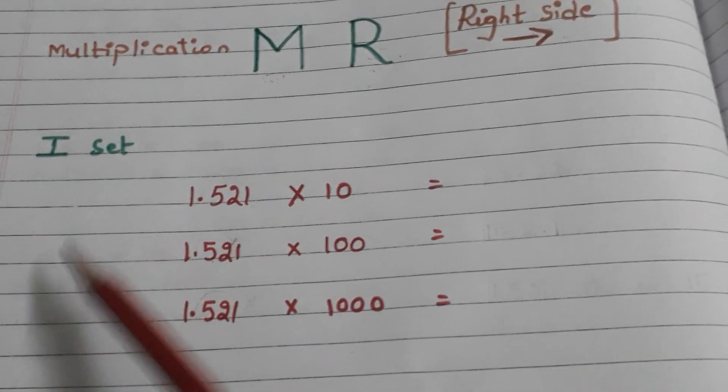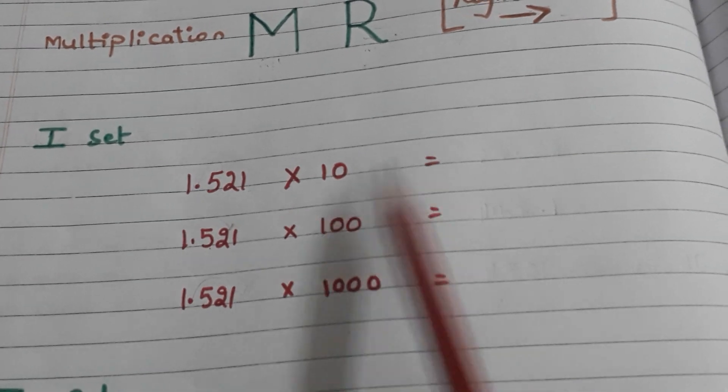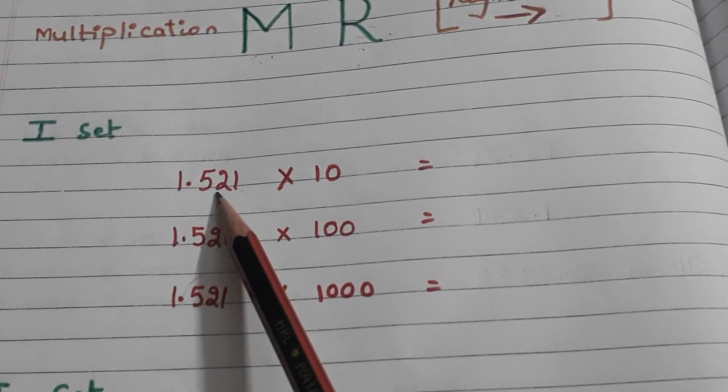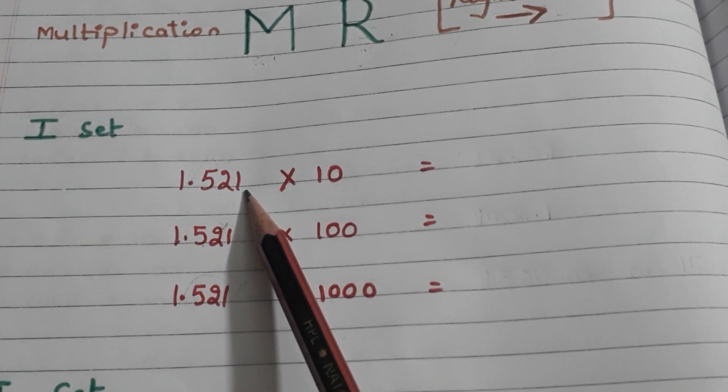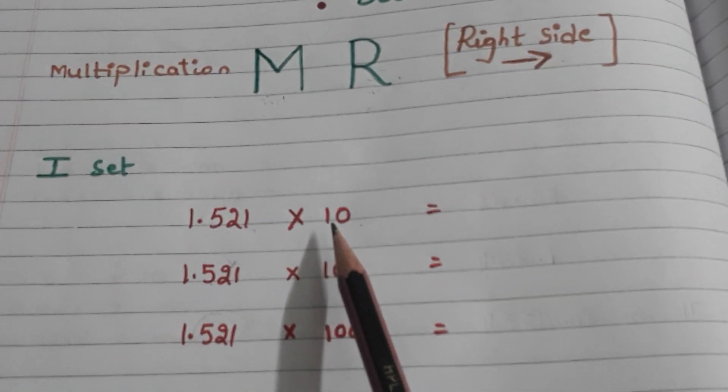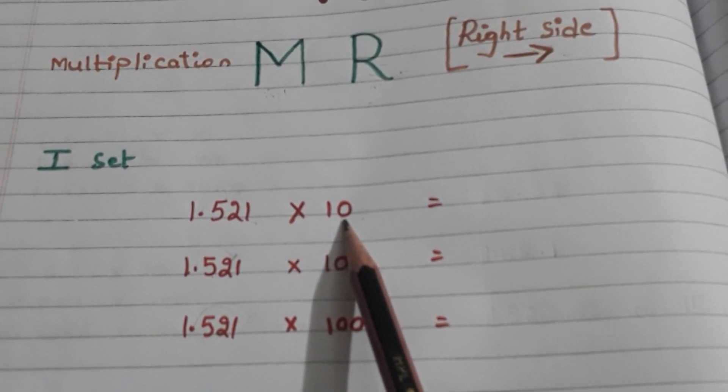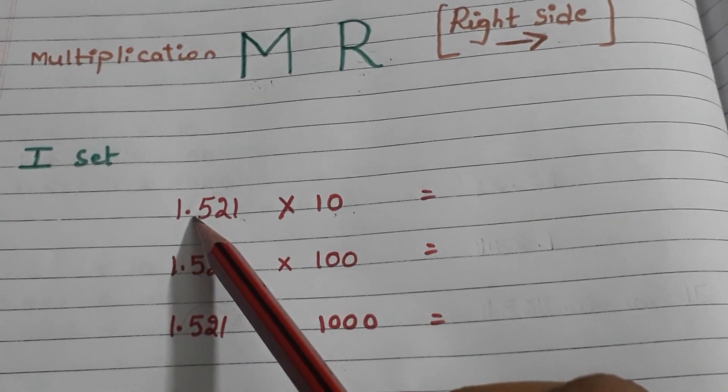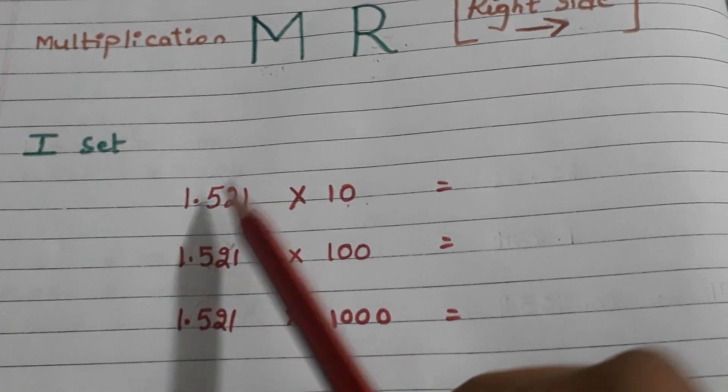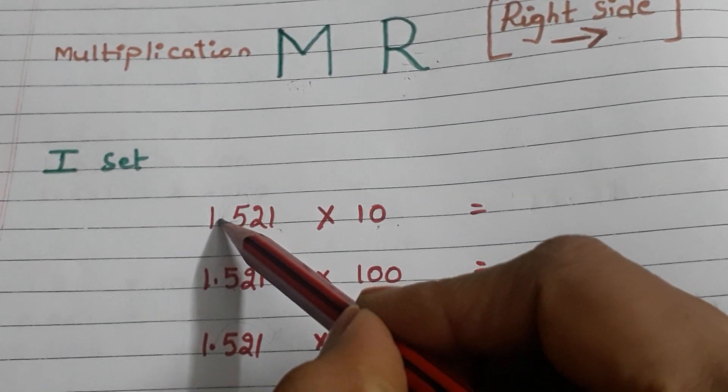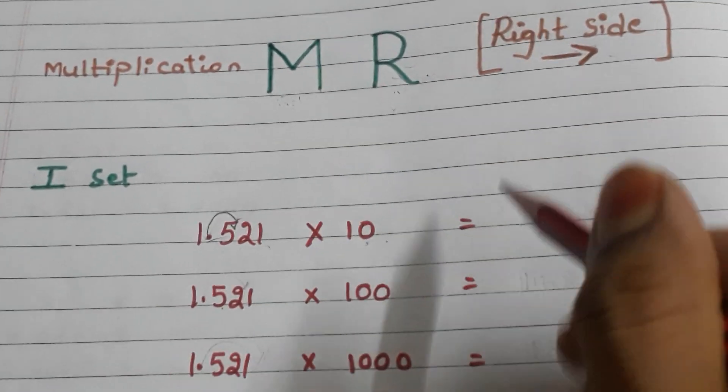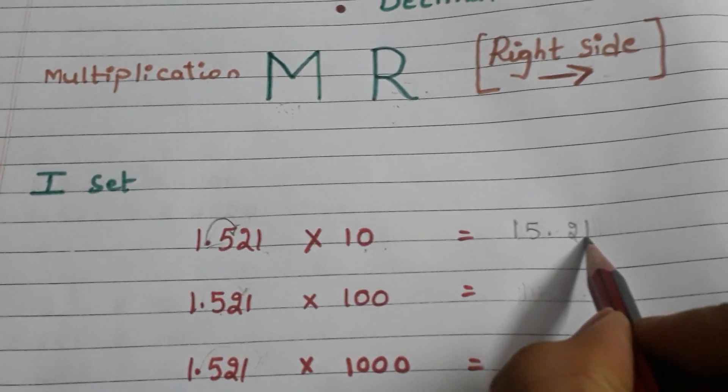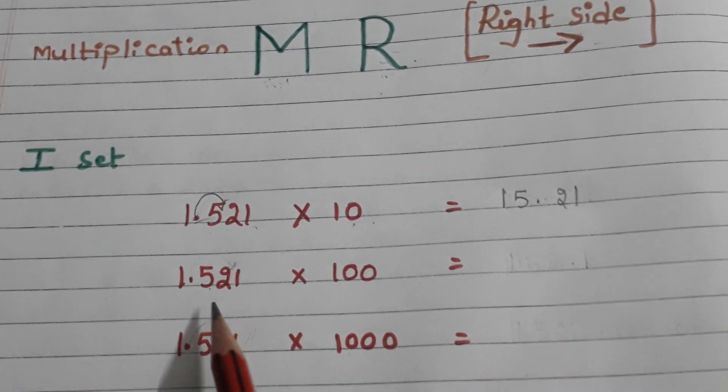Here we have a set of examples. In the first example we have the decimal number 1.521 and we are multiplying with 10. In 10 how many zeros are there? Only 1 zero. So I am moving this decimal by one place to the right. The answer is 15.21. Let us go to the second one.